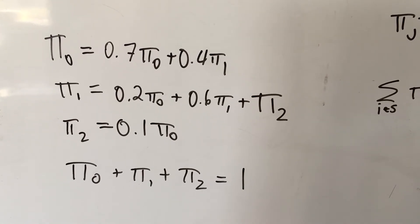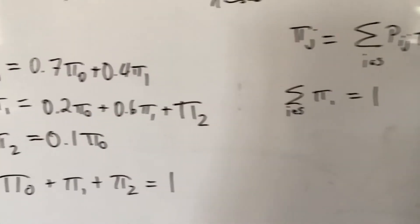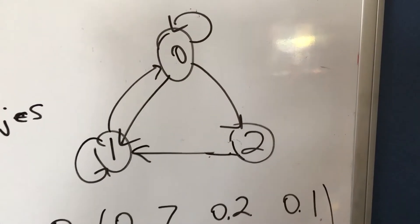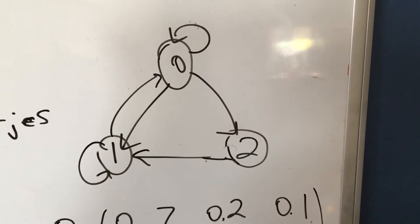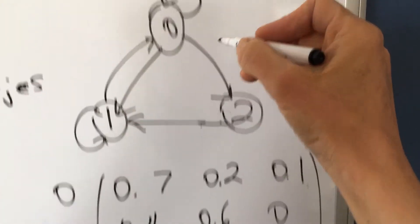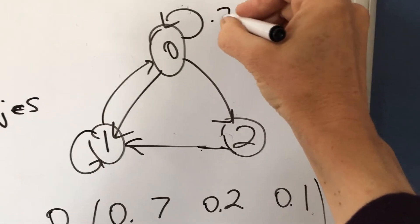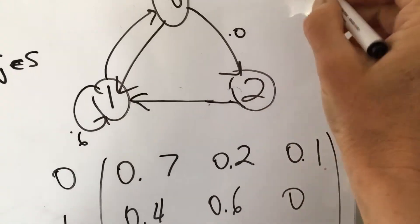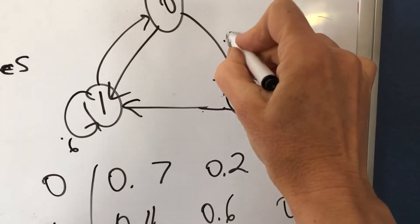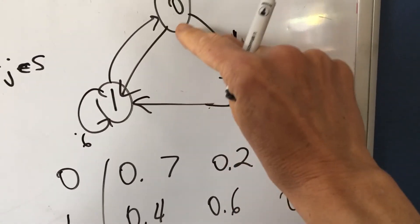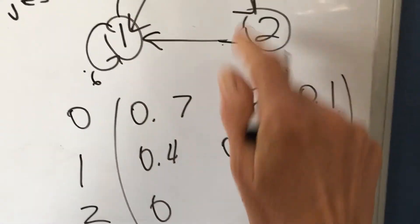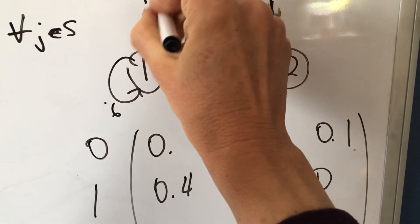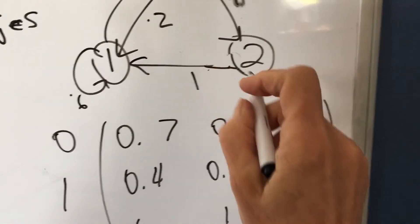We can also read these on the diagram. If we fill in our probabilities, we add up the probabilities of coming into each state times the long-run probability of wherever that came from. Translating the matrix: 0 to 0 is 0.7, 0 to 1 is 0.2, 0 to 2 is 0.1, 1 to 0 is 0.4, 1 to 1 is 0.6, and 2 to 1 goes with probability 1.